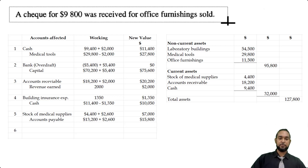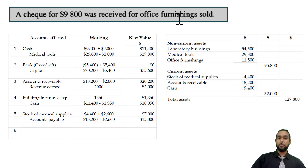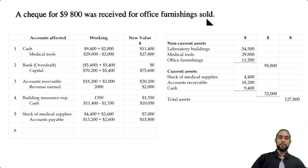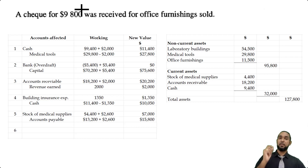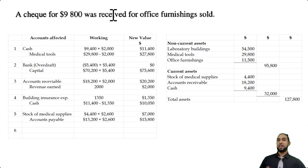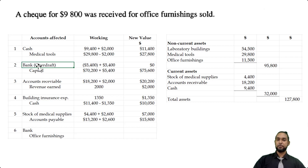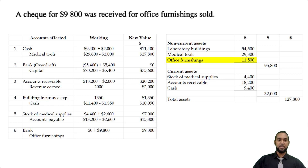The last item: a check for $9,800 was received for office furnishings sold. If we receive a check, bank is going up — bank is an asset increasing, so debit bank. Office furnishings is being sold, so it's decreasing — credit office furnishings. Bank was at zero after the overdraft was paid off in transaction two, and now we're collecting $9,800, so bank becomes $9,800. Office furnishings was $11,500 and it's going down, so we're left with $1,700.